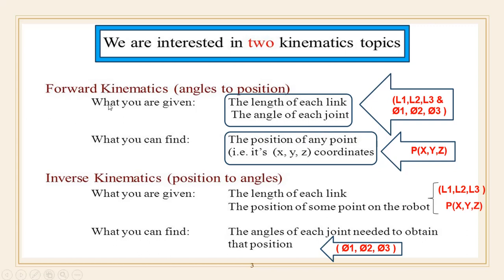In forward kinematics, what you are given: the length of each link — L1, L2, L3 — and the angle of each joint — theta1, theta2, theta3. These are the given parameters. You have to find out the unknown position and orientation of the robot hand in the workspace — the Cartesian coordinates of point P: X, Y, Z.